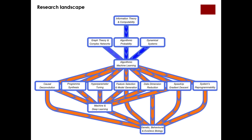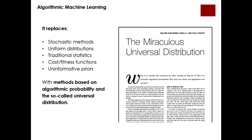We have come a long way covering many areas of science connected to algorithmic information dynamics, areas on which we stand to contribute to probably the most important topic in science — that of causation. It is in this sense that we think we can make contributions to the current area of machine learning with what we call causal deconvolution, program synthesis, and model generation, but also to more specific challenges such as hyperparameter tuning, feature selection, data dimension reduction, and faster optimization techniques.